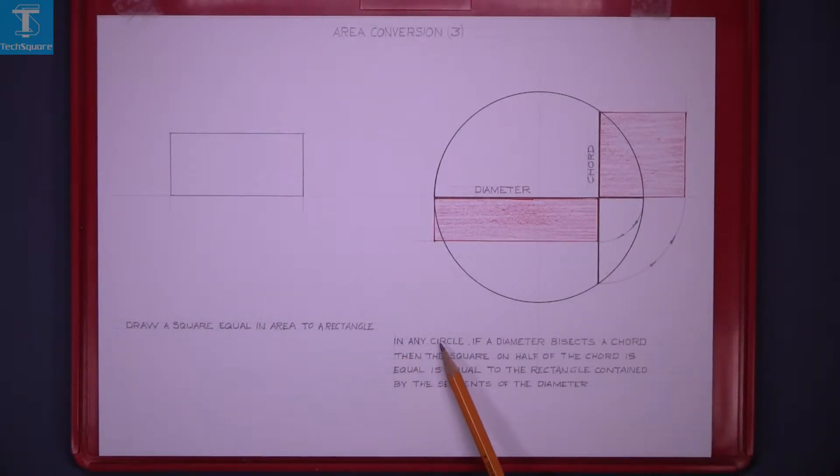In any circle, if a diameter bisects a chord, then the square on half of the chord is equal to the rectangle contained by the segments of the diameter.